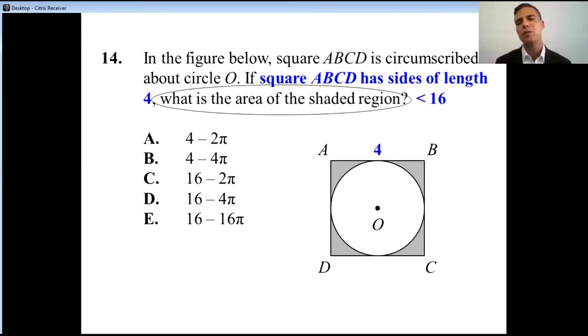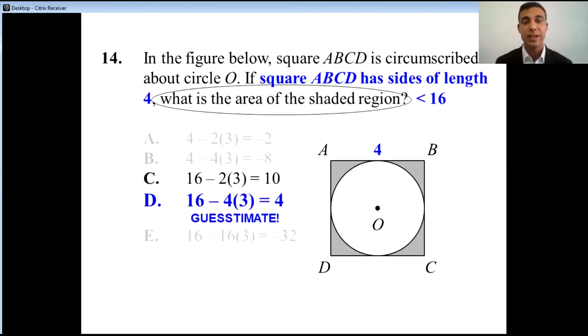If we had to try and think to ourselves what's possible for the shaded region, we should be looking for something that's a lot less than 16. Our two answer choices, C and D, one is 10, the other is 4. Which one's a lot less than 16? Certainly, this is less than half of the square. That means the only reasonable answer for us to actually get here is D.